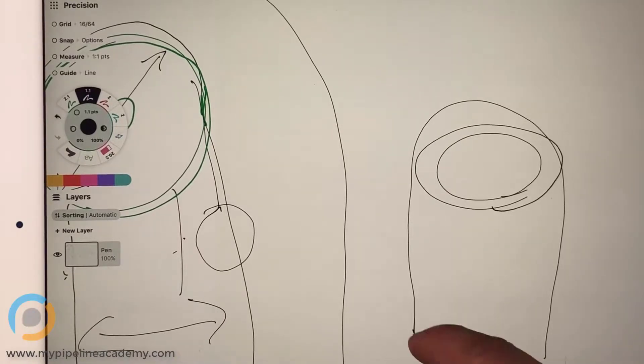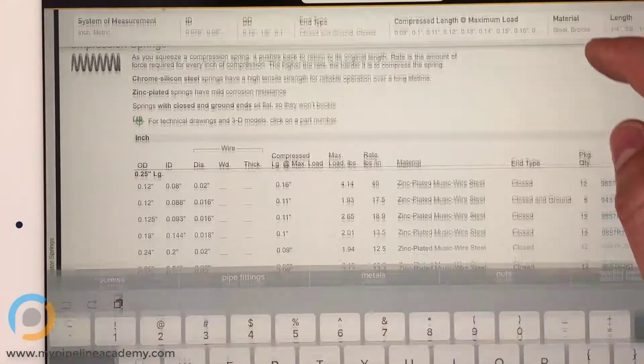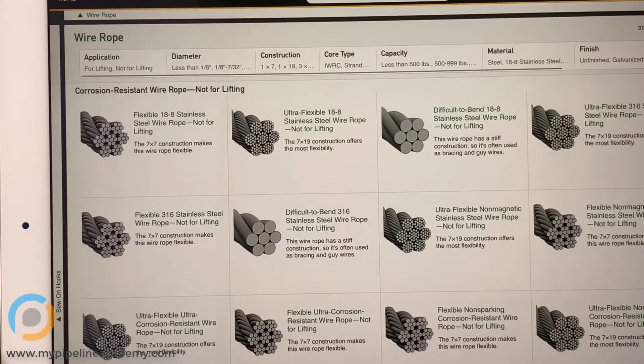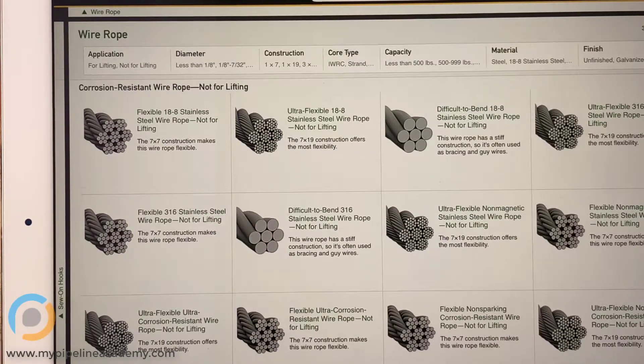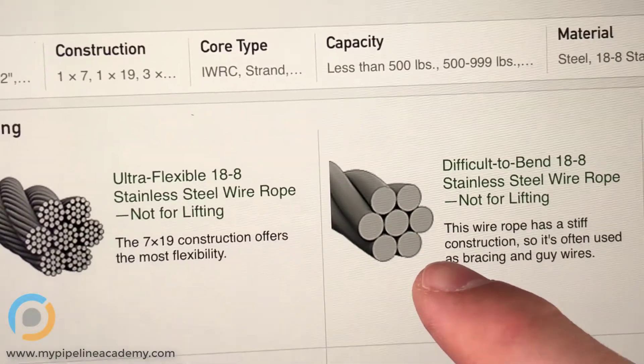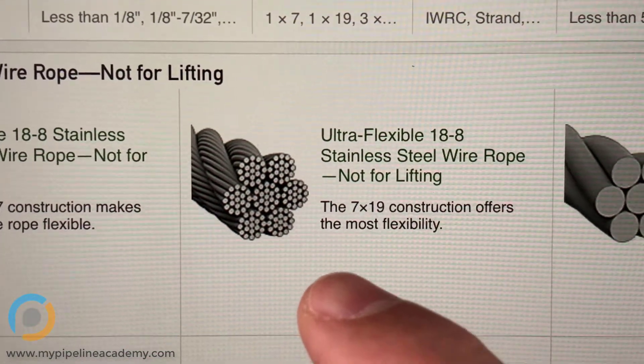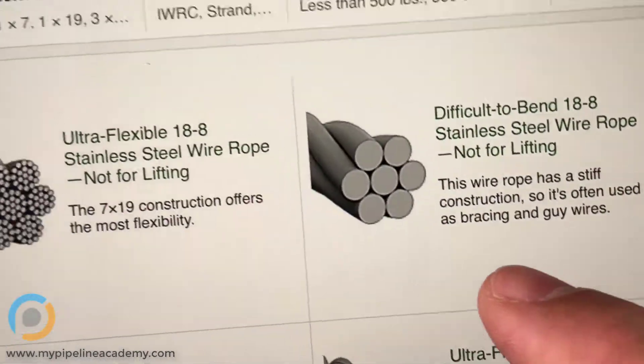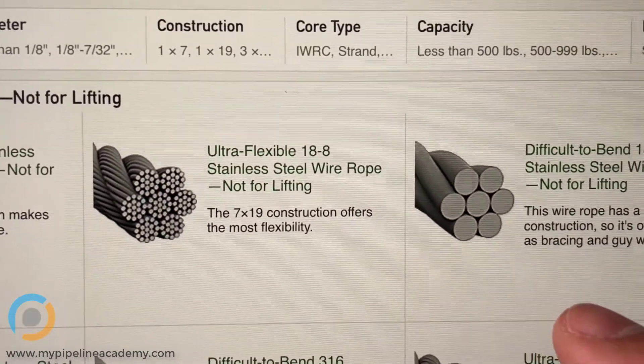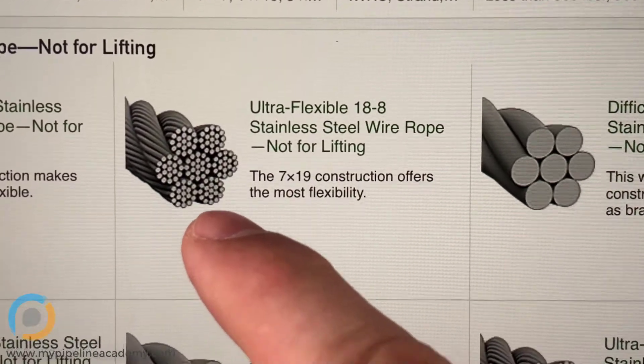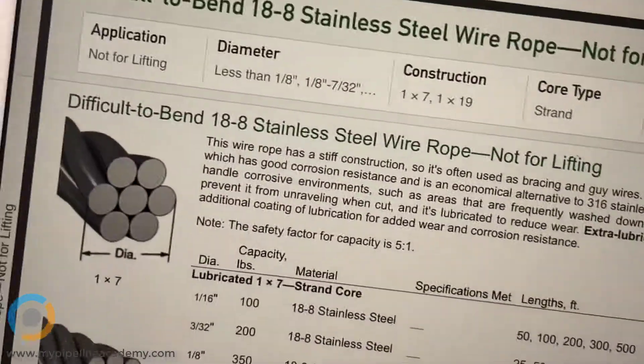Something else you could do is you could simply change the diameter of the wire rope or maybe not even the diameter, but different wire ropes have different constructions. So, if we type into McMaster wire rope. Okay. So, this kind of shows you all these different constructions of wire ropes. For example, we can't really zoom in very well and just lift this up. So, like this guy right here, this is seven strands of solid wire rope, whereas this one right here is seven bundles where each bundle looks like 19 strands of smaller diameter wire rope. And these different constructions have different bend radii associated with them. Something like this that uses bundles of smaller diameter wires will have a smaller possible bend radius than something like this that uses larger, oops, larger diameter wires.